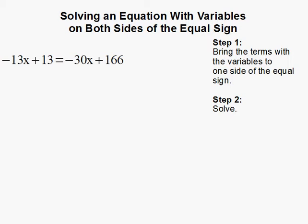Solving an equation with variables on both sides of the equal sign. The first step is to bring the terms with the variables to one side of the equal sign and all the numbers to the other.